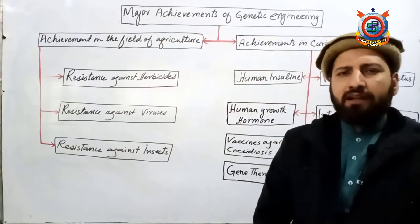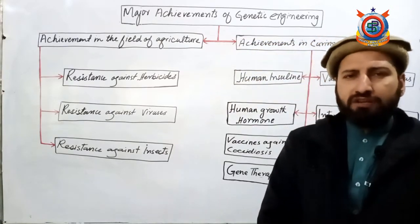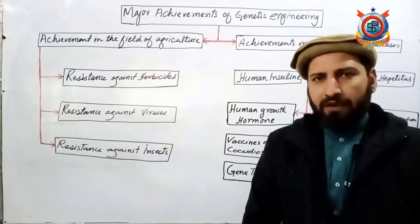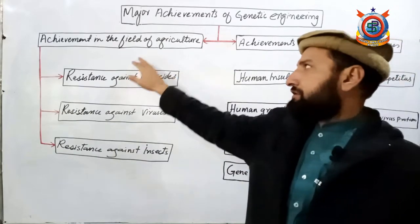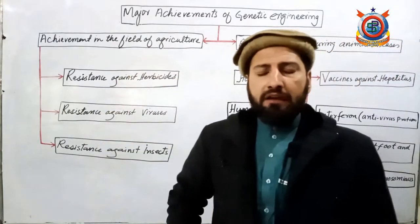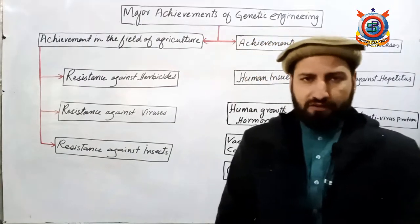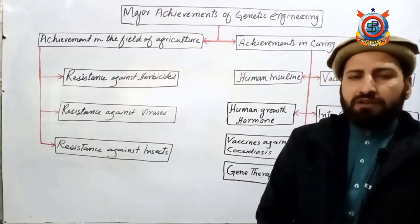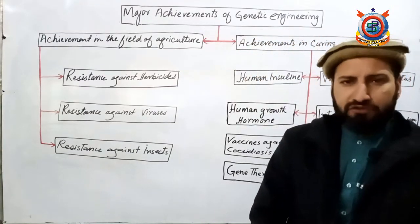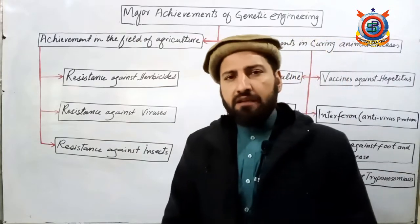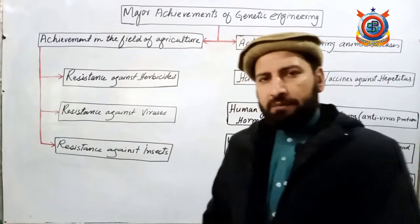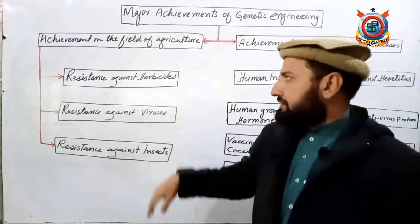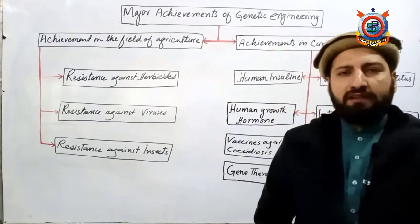آج ہم پڑھنے جا رہے ہیں کہ genetic engineering میں کیا کیا achievements کی ہیں۔ پہلی achievement: achievements in the field of agriculture۔ Agriculture کے field میں genetic engineering نے بہت بڑے achievements کیے ہیں، جس میں تین بڑے achievements آپ اپنے سکرین پر دیکھ رہے ہیں۔ پہلی achievement ہے resistance against herbicides۔